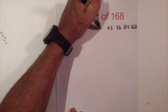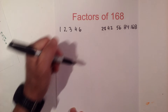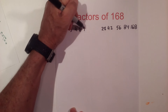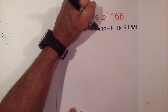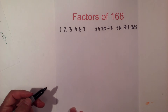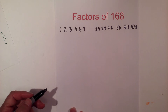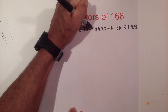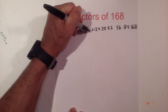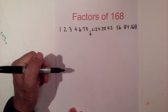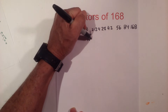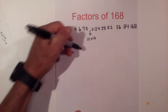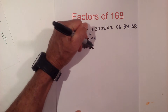6 goes into 168 28 times, and then 7 goes into 168 — I said it had quite a few factors — times 24. Hopefully I won't run out of room. Then we have 8 times 21, and then the last pair is 12 times 14.